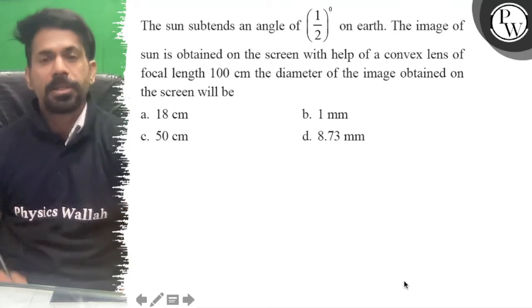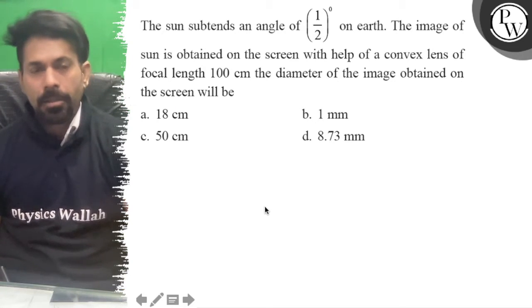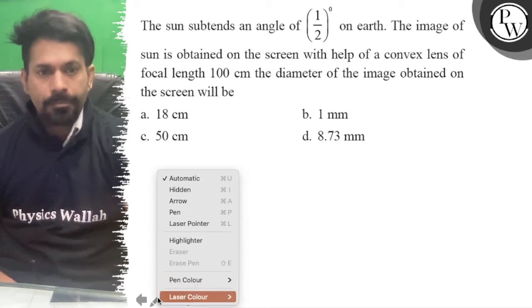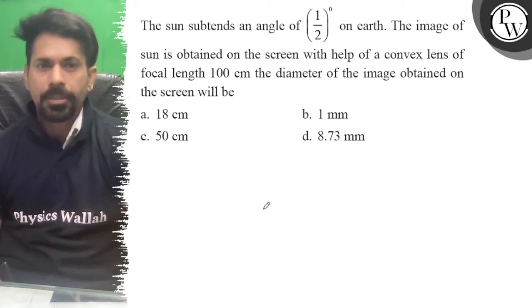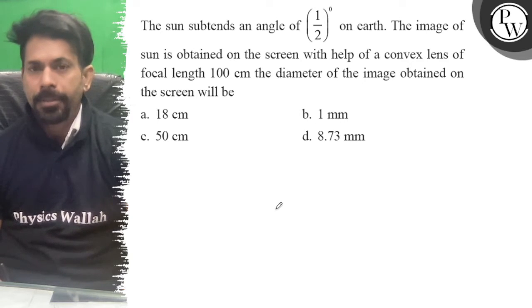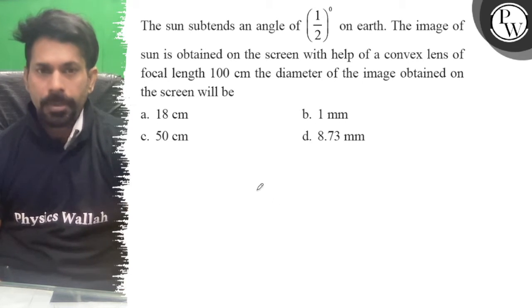Hello, the sun subtends an angle of 1/2 degree on earth. The image of sun is obtained on the screen with the help of a convex lens of focal length 100 centimeters. The diameter of the image obtained on the screen will be: